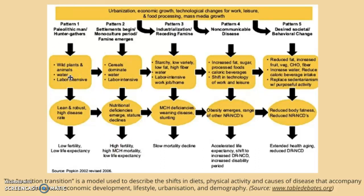Pattern one is paleolithic man, or hunter-gatherers. The kind of food is mainly wild plants, animals, and water. It's very labor intensive and people tend to be very lean, with high disease rates, low fertility, and low life expectancy.